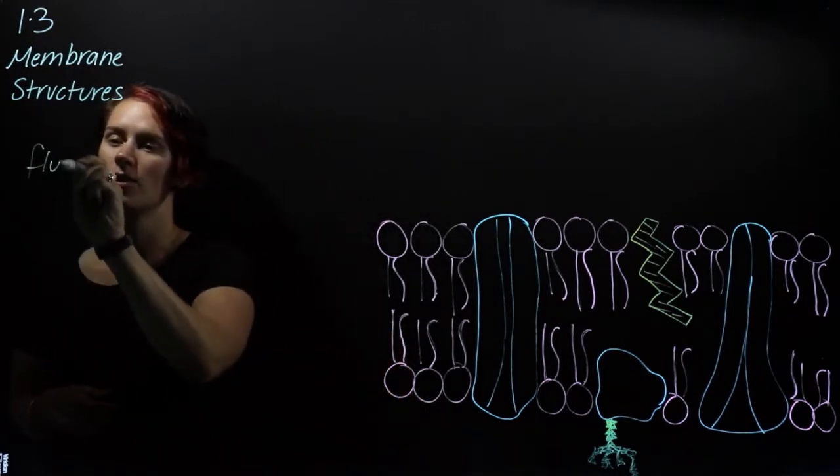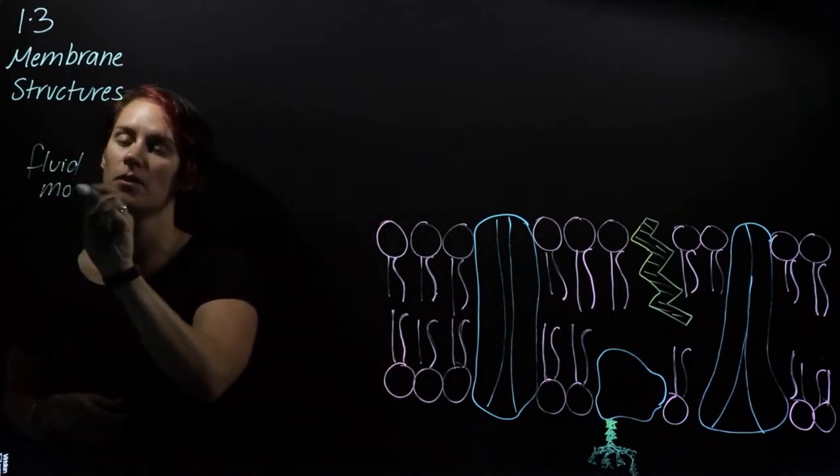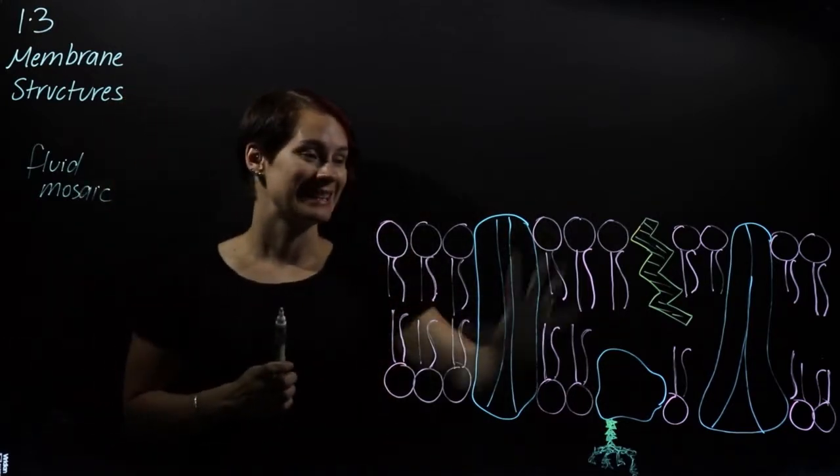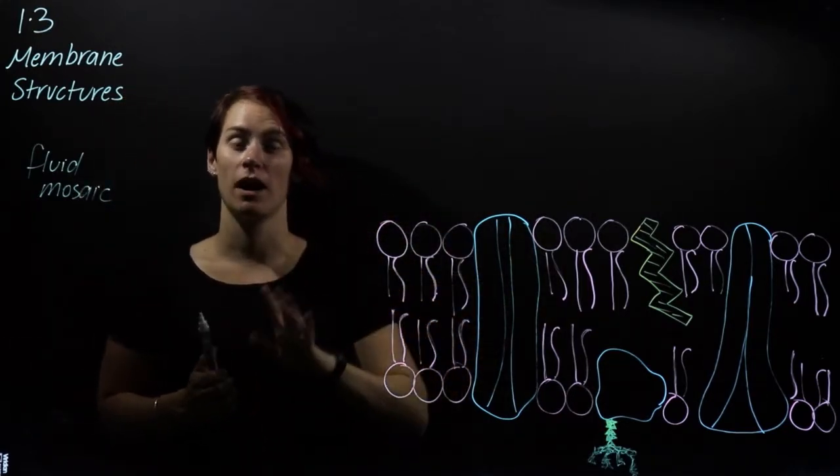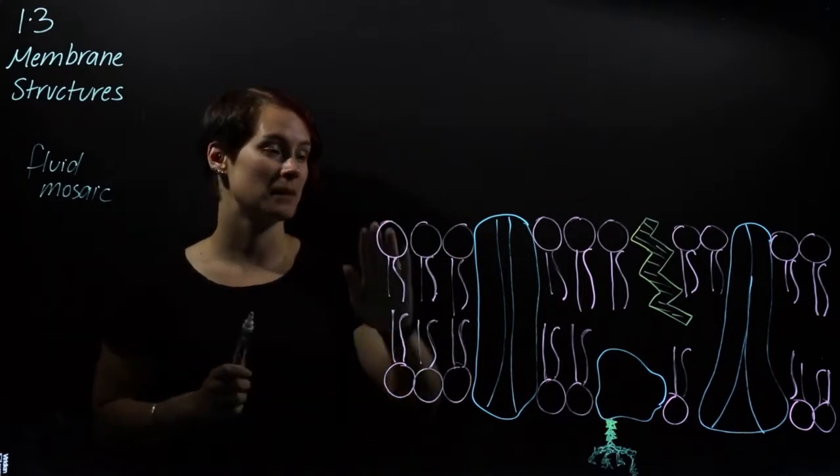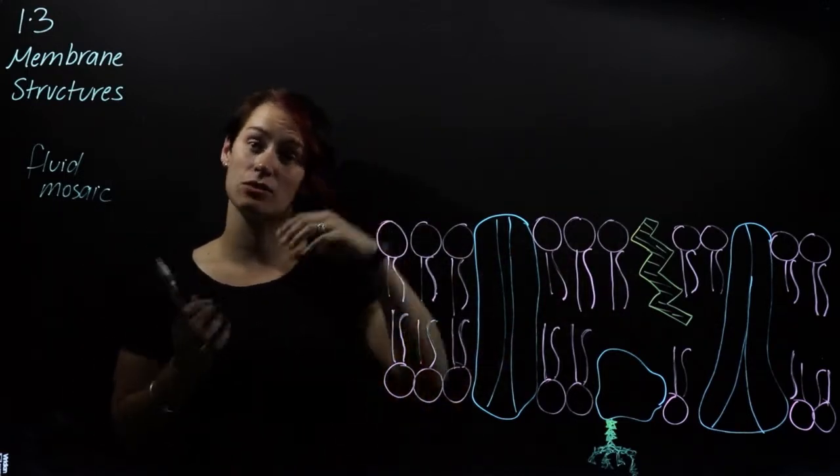A cell membrane is known as a fluid mosaic. It is fluid, things can move around, it has to be quite flexible, and it's known as a mosaic because it's made up of lots of different elements that all fit together.